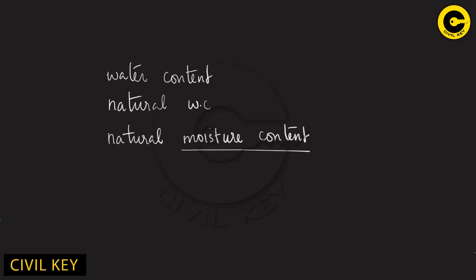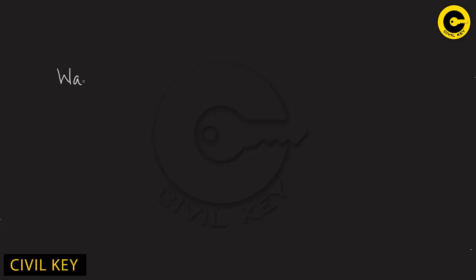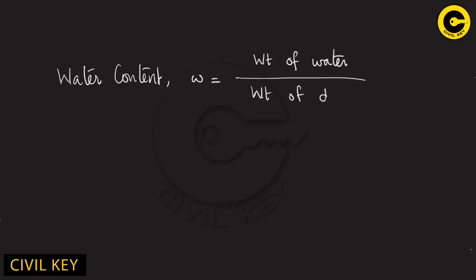Soil water content is the ratio of the weight of water to the weight of solids — the amount of water divided by the amount of solids — expressed as a percentage. It is denoted by small w. The equation is: w equals weight of water present in soil mass divided by weight of dry soil, expressed as a percentage.